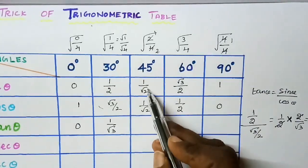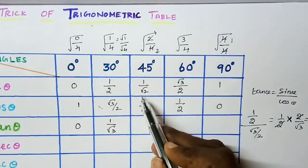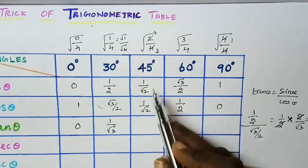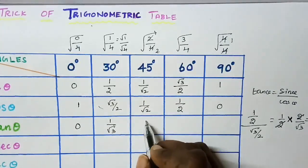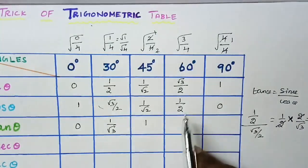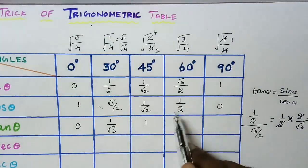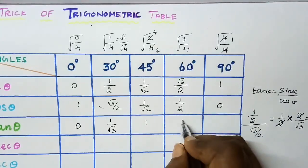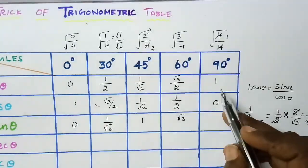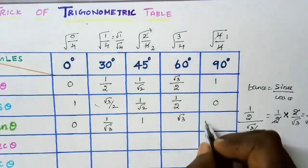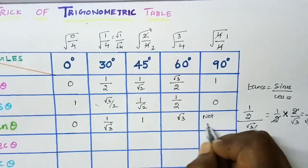Next, for 90 degrees, we get 1 by 0 which is not defined. So write not defined.